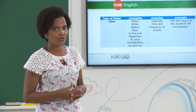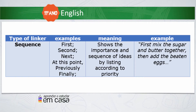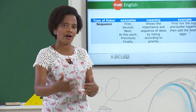There are more linkers, of course. Now we're going to see when we want to show sequence. To show sequence, we can use: first, second, next, at this point, previously, finally. They show the importance and the sequence of ideas by listing according to priority. For example, when making a cake: first mix the sugar and the butter together, then add the beaten eggs, and you continue on showing the sequence of the recipe.